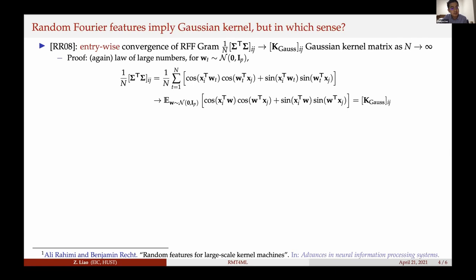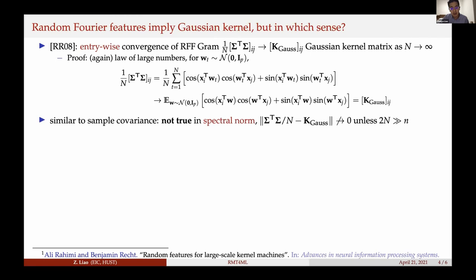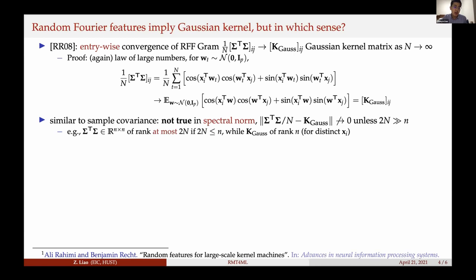However, just as in the sample covariance matrix example, this entry-wise convergence does not immediately imply convergence in spectral norm. We cannot say the random Fourier feature Gram matrix is close to the Gaussian kernel matrix unless the number of neurons N is much larger than the number of data points. This has a significant impact on random Fourier feature-based algorithms because it is really the spectral norm that we need to control to understand the MSE in random Fourier feature ridge regression.